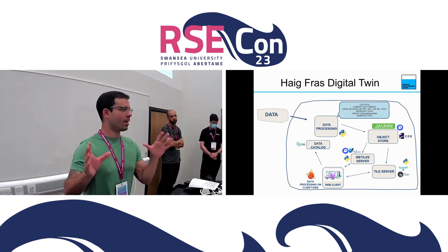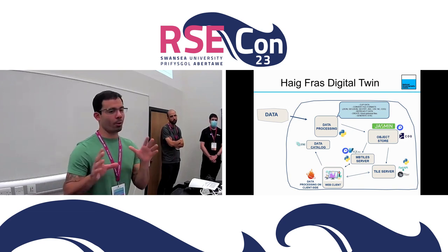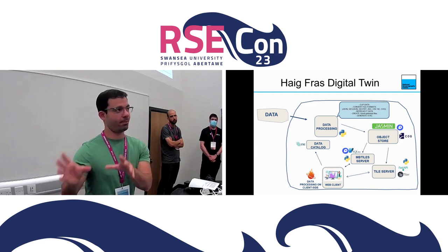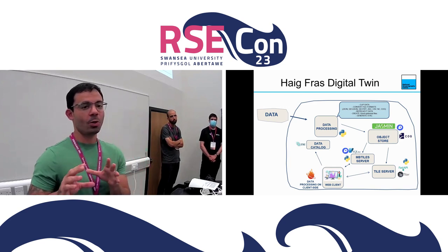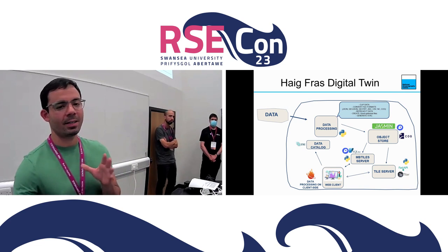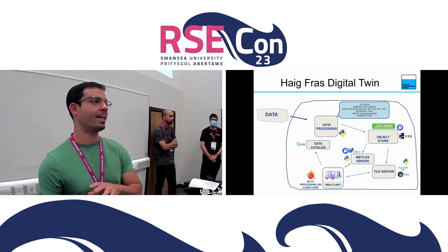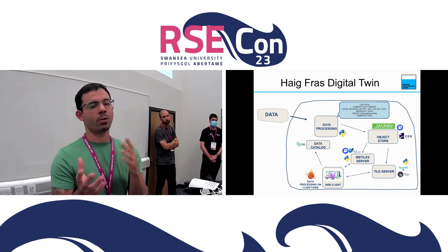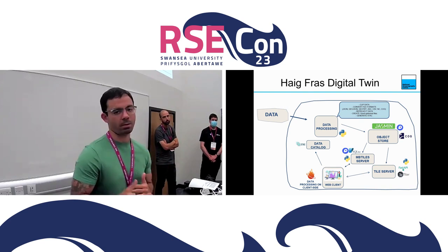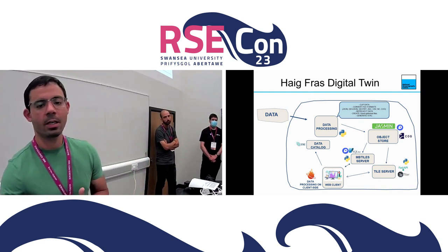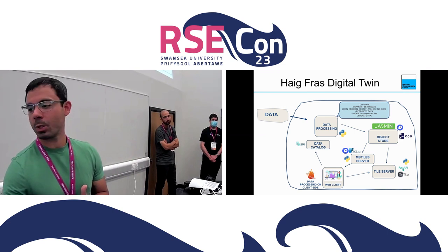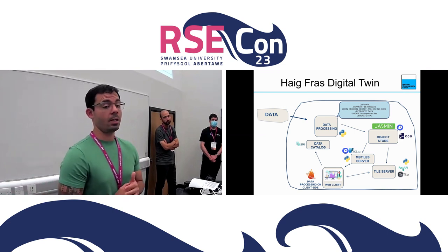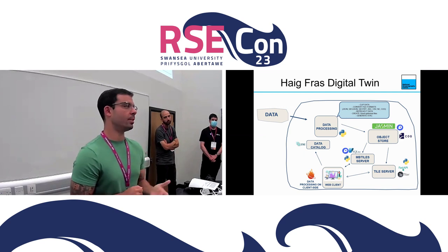As it is a database, you don't need to download everything — you only get the part of the data you need when you perform a query. This is a simple architecture of our project, just to give an idea of how it works for the front-end people. We have a data processing pipeline getting data from different formats and converting it to cloud-optimized formats like COG and MBTiles. We then perform HTTP range requests from the web client to the object store to get and display the data in the front end.